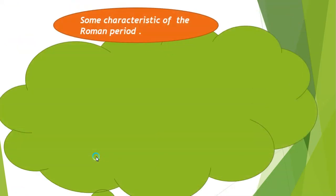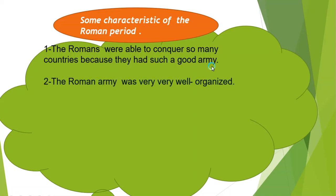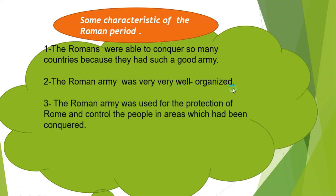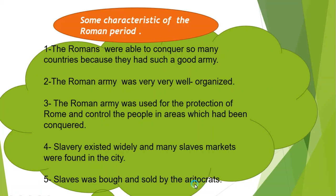Some characteristics of the Roman period: the Romans were able to conquer so many countries because they had a very strong and well-organized army. The Roman army was also used for the protection of Rome and to control people in areas that had been conquered. Additionally, slavery existed widely, and many slave markets were found in the city. Slaves were bought and sold by the aristocrats.